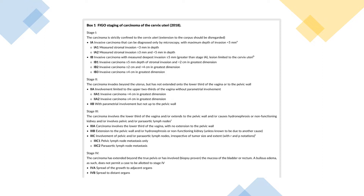1B is invasive carcinoma with measured deepest invasion of greater than or equal to 5 mm. 1B1 is invasive carcinoma with depth of stromal invasion of less than 2 cm in greatest dimension. 1B2 is invasive carcinoma of greater than or equal to 2 cm and less than 4 cm in greatest dimension. 1B3 is invasive carcinoma greater than or equal to 4 cm in greatest dimension.